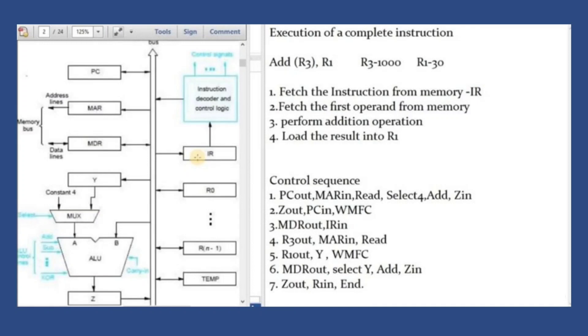The first step of the instruction is fetching the instruction. We will fetch the instruction from the memory and then store this instruction in the IR register, the instruction register. By storing this instruction, we will perform the addition operation between the two operands R3 and R1.